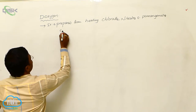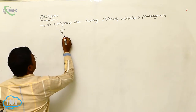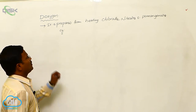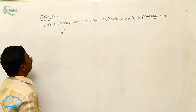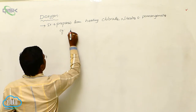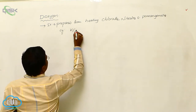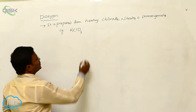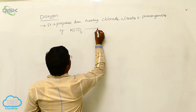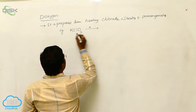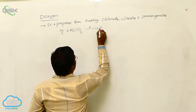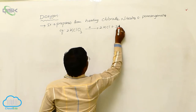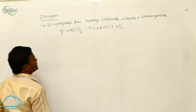Let us have some examples. Which reactions yield the preparation of Dioxygen in the laboratory? KClO3, potassium chlorate, when heated, it releases 2KCl plus 3O2.